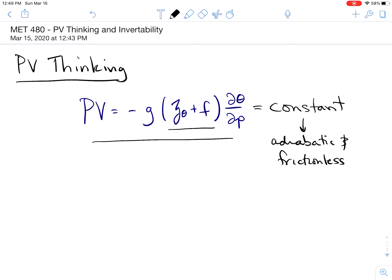And so this suggests that a parcel exchanges stratification or stability for circulation and vice versa. But under these conditions of being adiabatic and frictionless, the total value of PV will remain unchanged, unless of course the flow is not adiabatic.